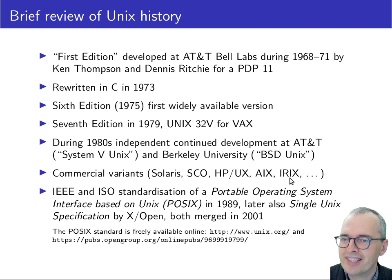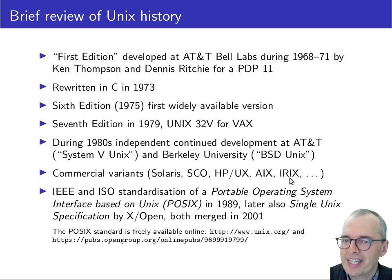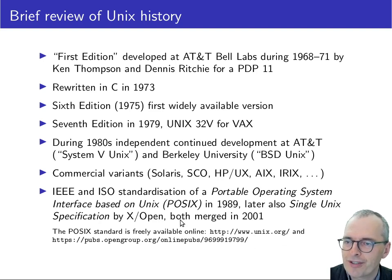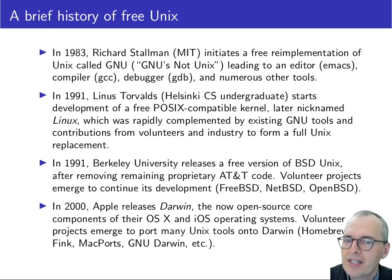Every manufacturer did a few details differently, which is a nuisance for application programmers. So in the late 1980s there was an international standardization effort to bring together all these different Unix API versions. There were actually two such efforts: the Portable Operating System Interface based on Unix project, also known as POSIX, and a separate effort called the Single Unix Specification, and they were finally merged in 2001.